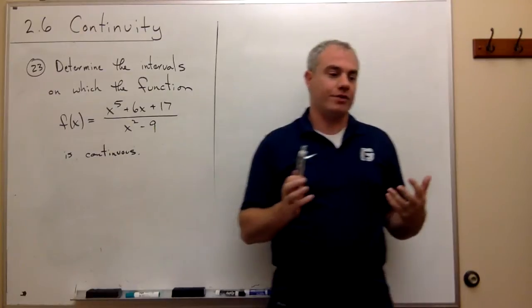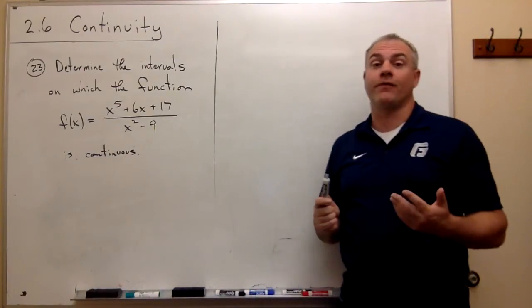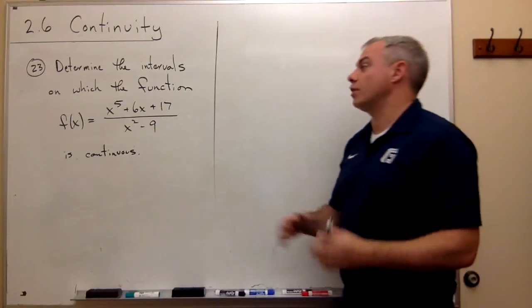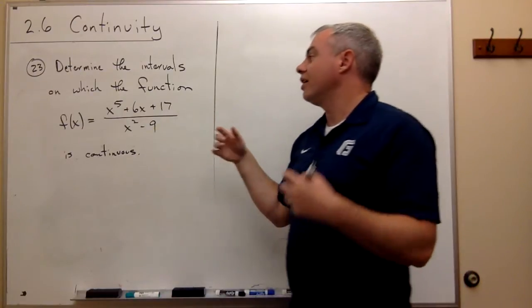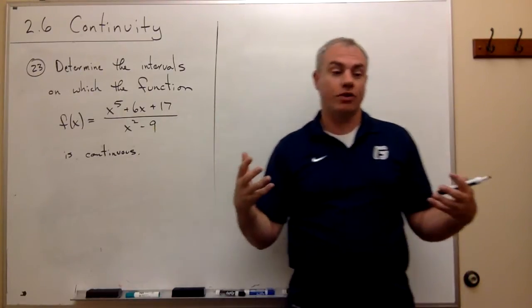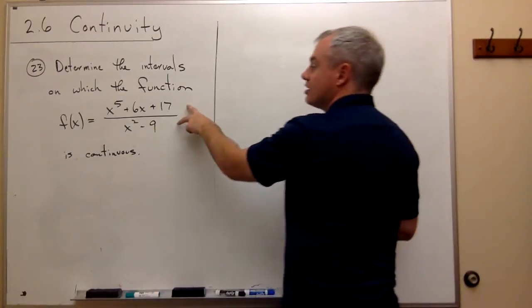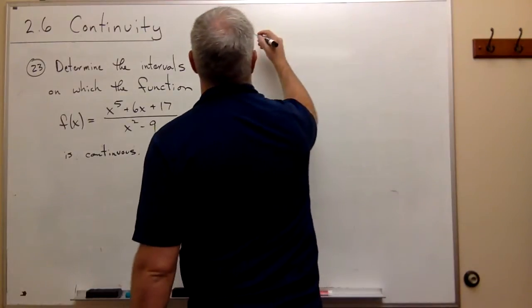If we're trying to figure out intervals on which it is continuous, then it would probably be fairly helpful for me to figure out where is it not continuous. And places where this thing is not going to be continuous are places where there's some sort of a hole in the graph, a jump in the graph, a discontinuity of some sort. So let's factor this thing and look for places like that.